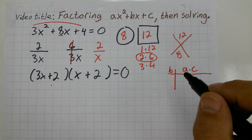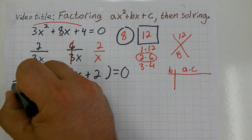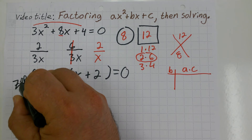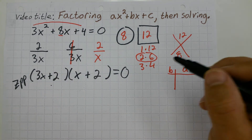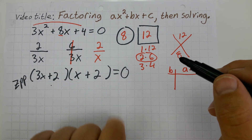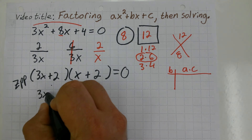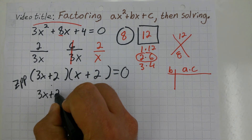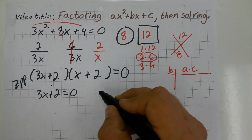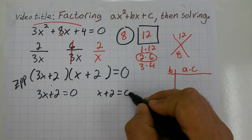Now what I need to do to solve is use the ZPP, which is the Zero Product Property. I'm going to set each of these factors equal to 0. So that gives me one factor: 3x plus 2 equals 0. And the other factor: x plus 2 equals 0.